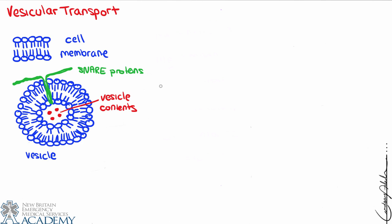There are two types of vesicular transport: endocytosis and exocytosis. There are a couple of other things we can mention, but for now we'll start with those.